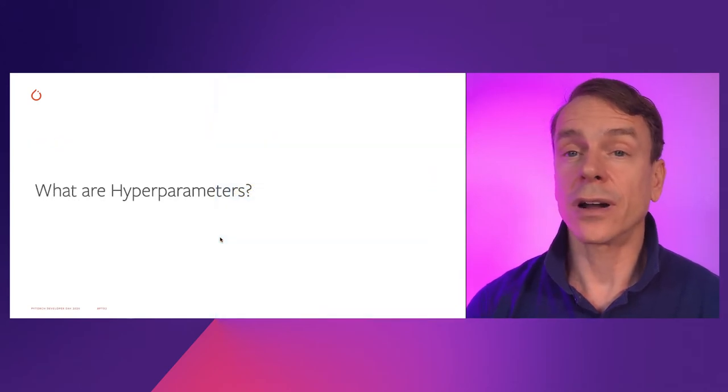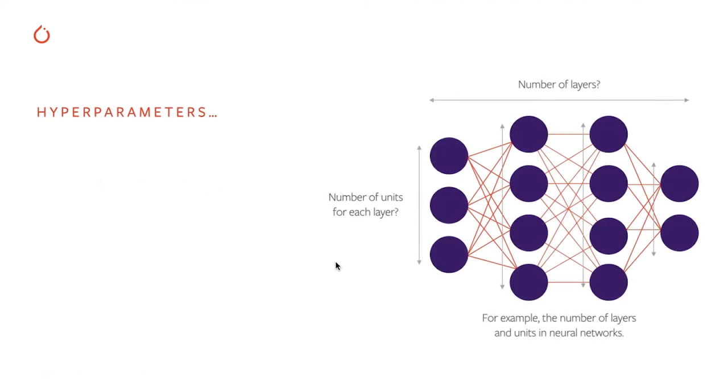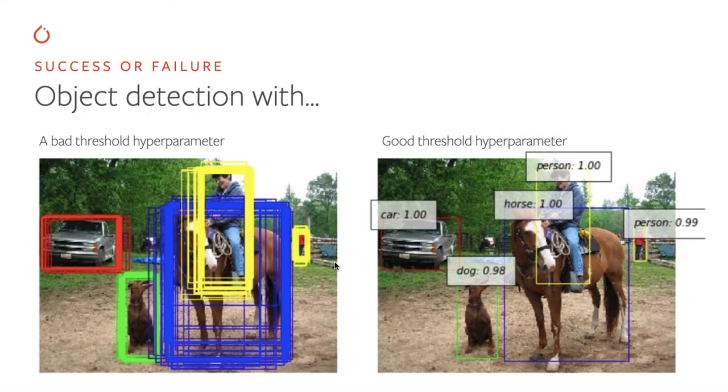So starting with what are hyperparameters. Typically in the deep learning world you might think of hyperparameters as the number of layers or the number of units within each layer or perhaps the learning rate of your optimizer. Generally they are controlling the behavior of the algorithms and they're determining the performance of those algorithms, how well they actually do, and they're typically set manually. But they also determine the success or failure of your overall algorithms.